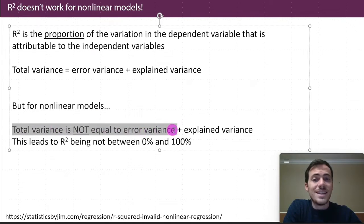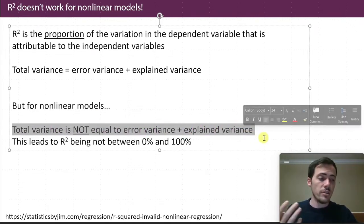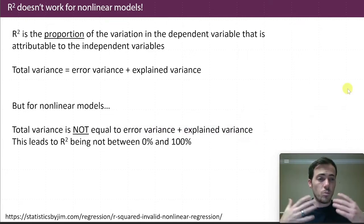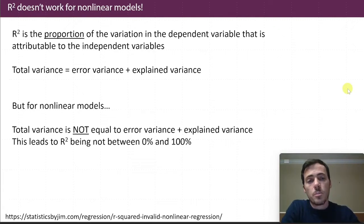The total variance is not equal to error of your variance plus your explained variance, right? It can be something totally different. And what it is equal to depends on what on earth kind of equation you came up with in your nonlinear equation. But the problem is that if that's not true, then R squared is no longer a number between 0 and 100, right? And so you can get really crazy numbers, and you don't know how to interpret them.